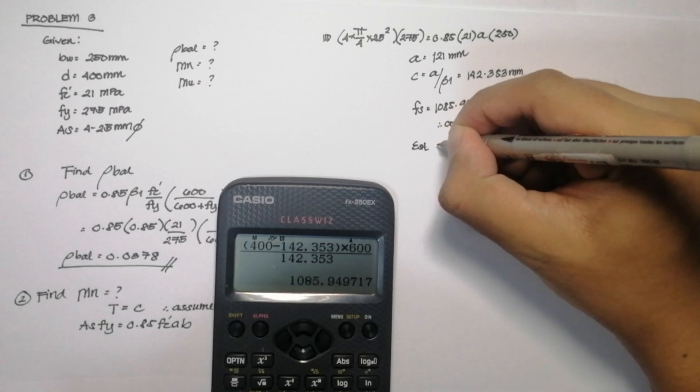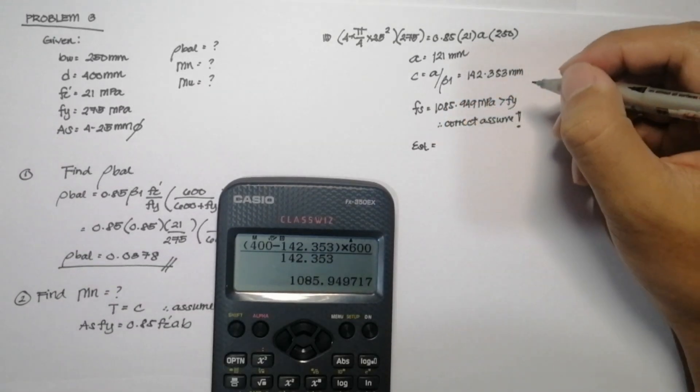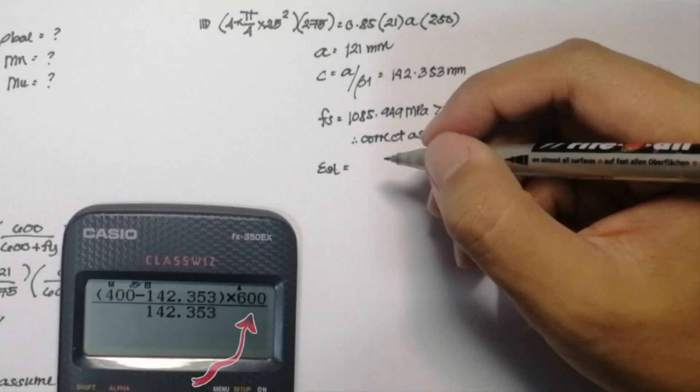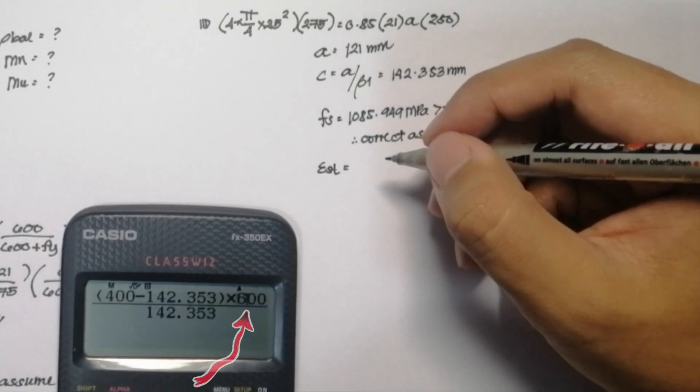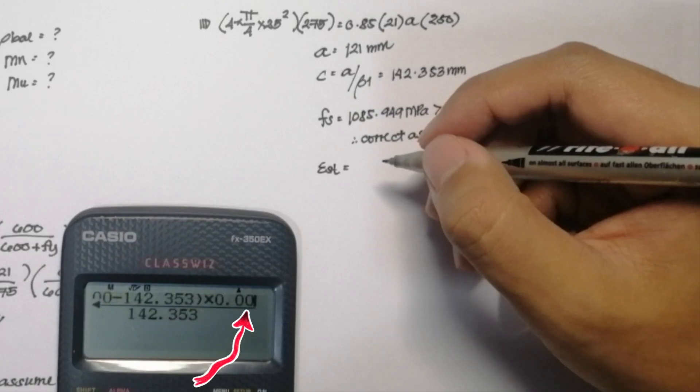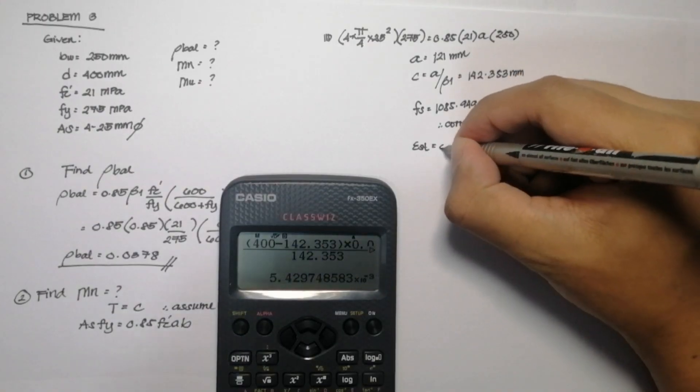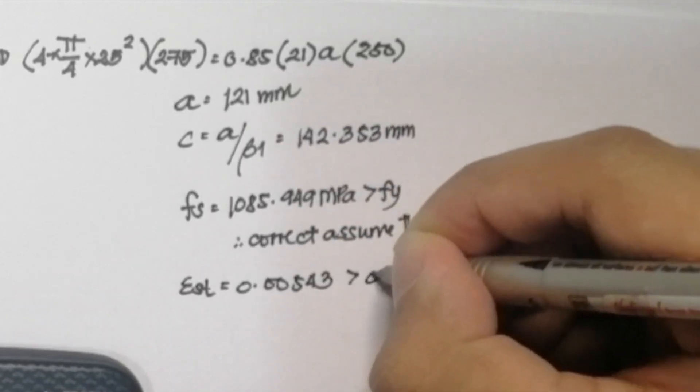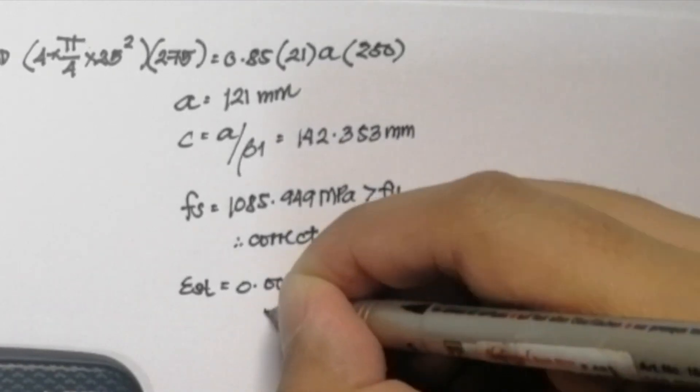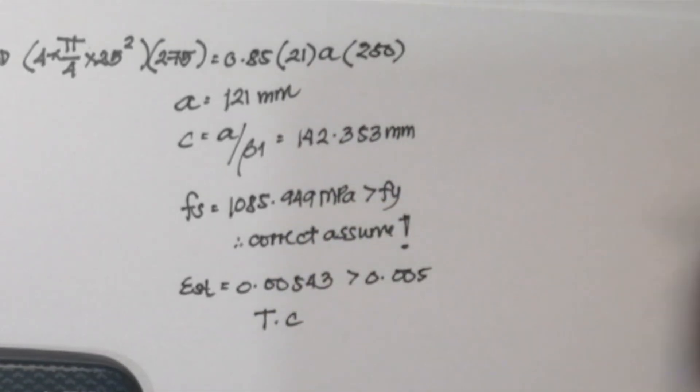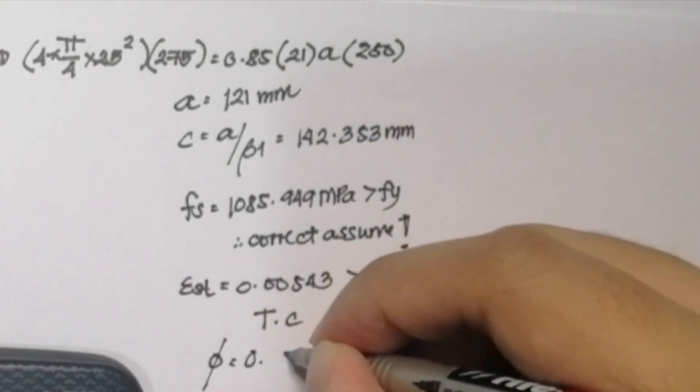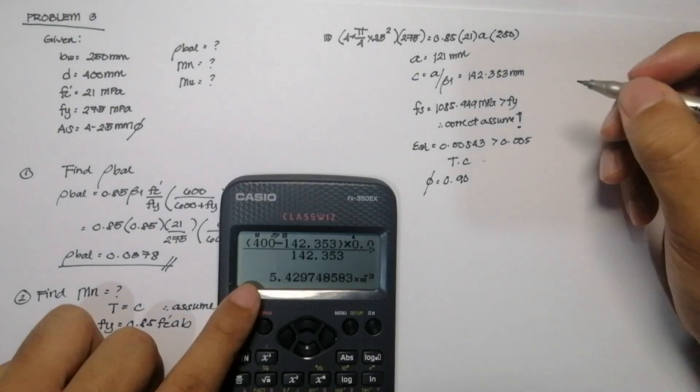Next is, we need to solve for the value of the strain in the steel. It is similar in solving for the stress in the steel. We just only need to change our multiplier. Instead of 600, we need to use 0.003. So we get a value of 0.0054297. And it is greater than 0.005. So our member is within the tension-controlled section. So automatically, the reduction factor will be 0.90.